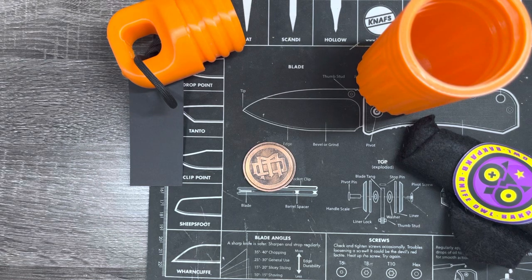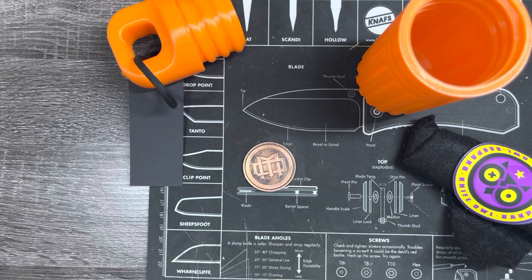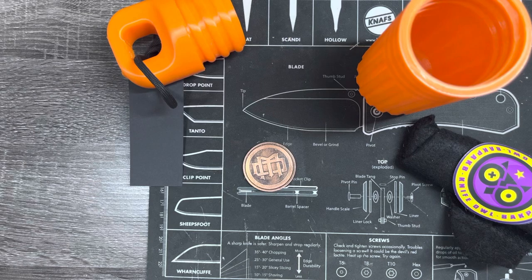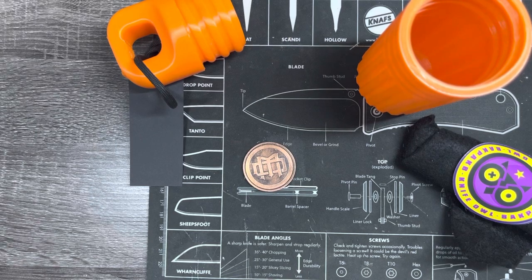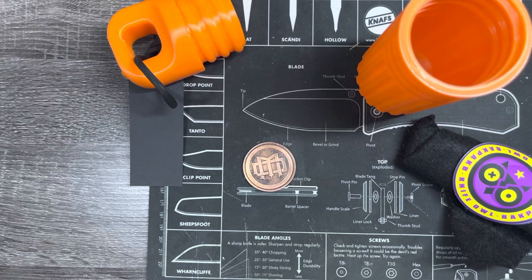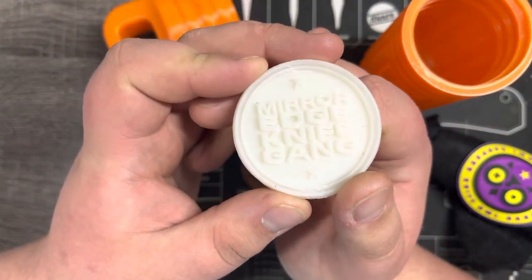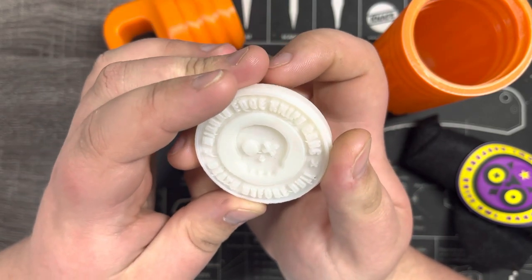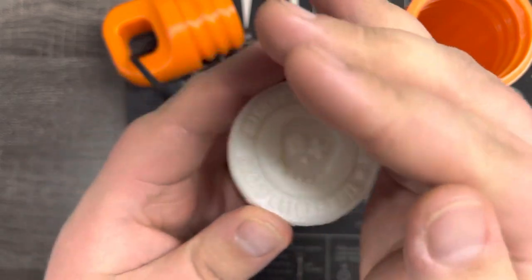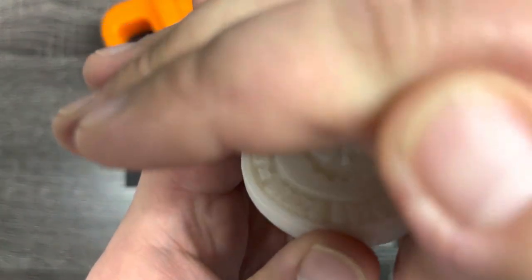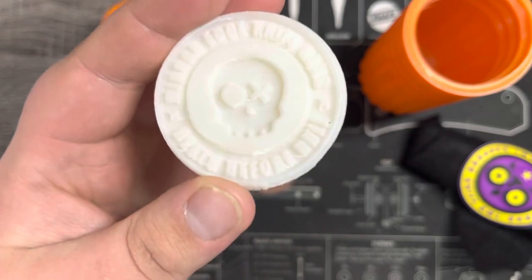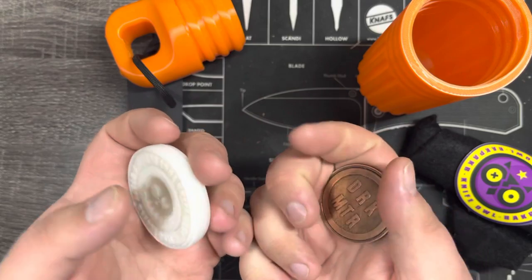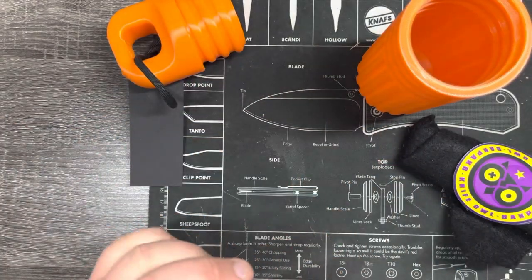I do have another coin from Brent that I cannot seem to locate at the moment. This here, you got Mirror Edge Knife Gang. And this is Mirror Edge Knife Gang, death before dull. And what you won't be able to tell is that it glows. It has to charge in the light. It's been on the floor, so it's not charging. But now I have two coins coming out of Brent's shop. One copper and one 3D printed. So that is super cool.